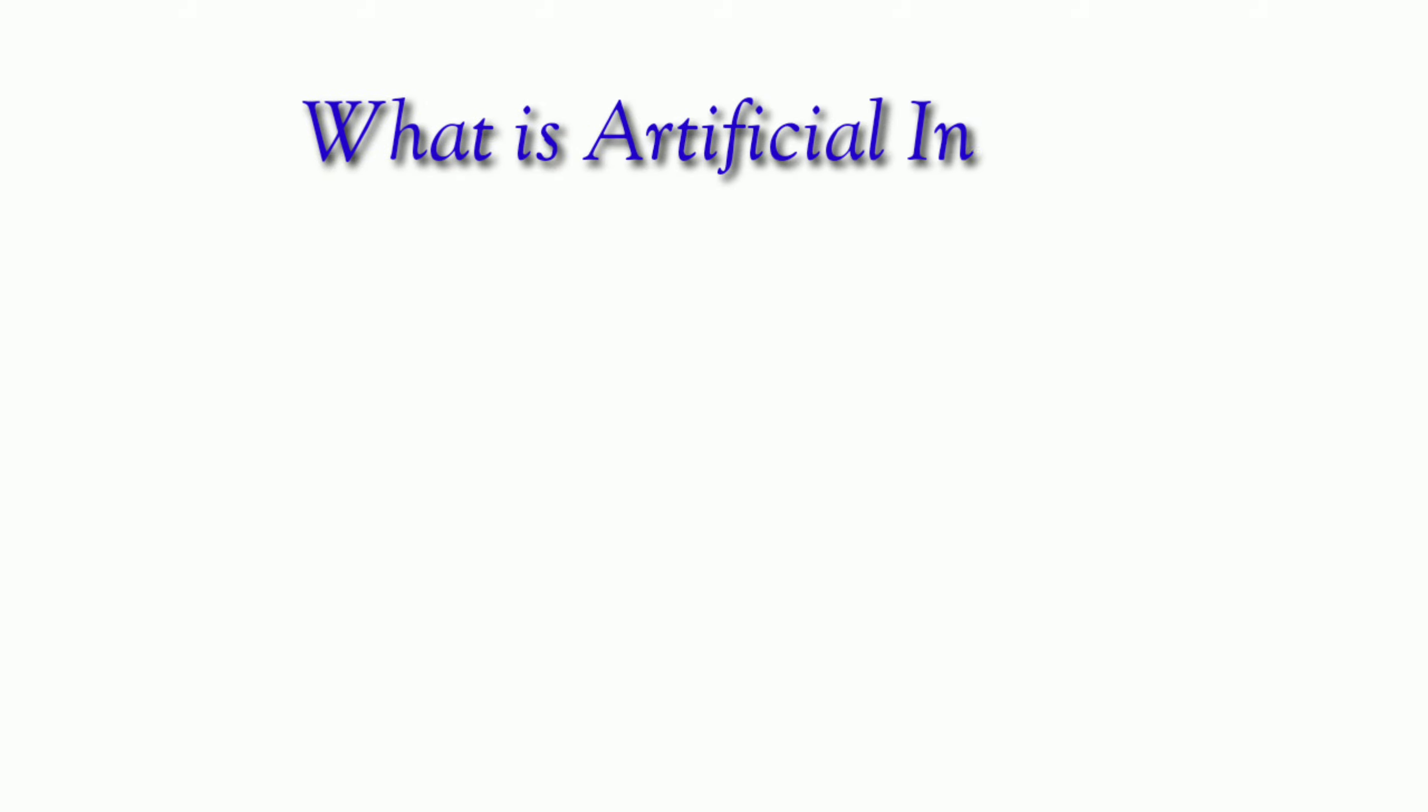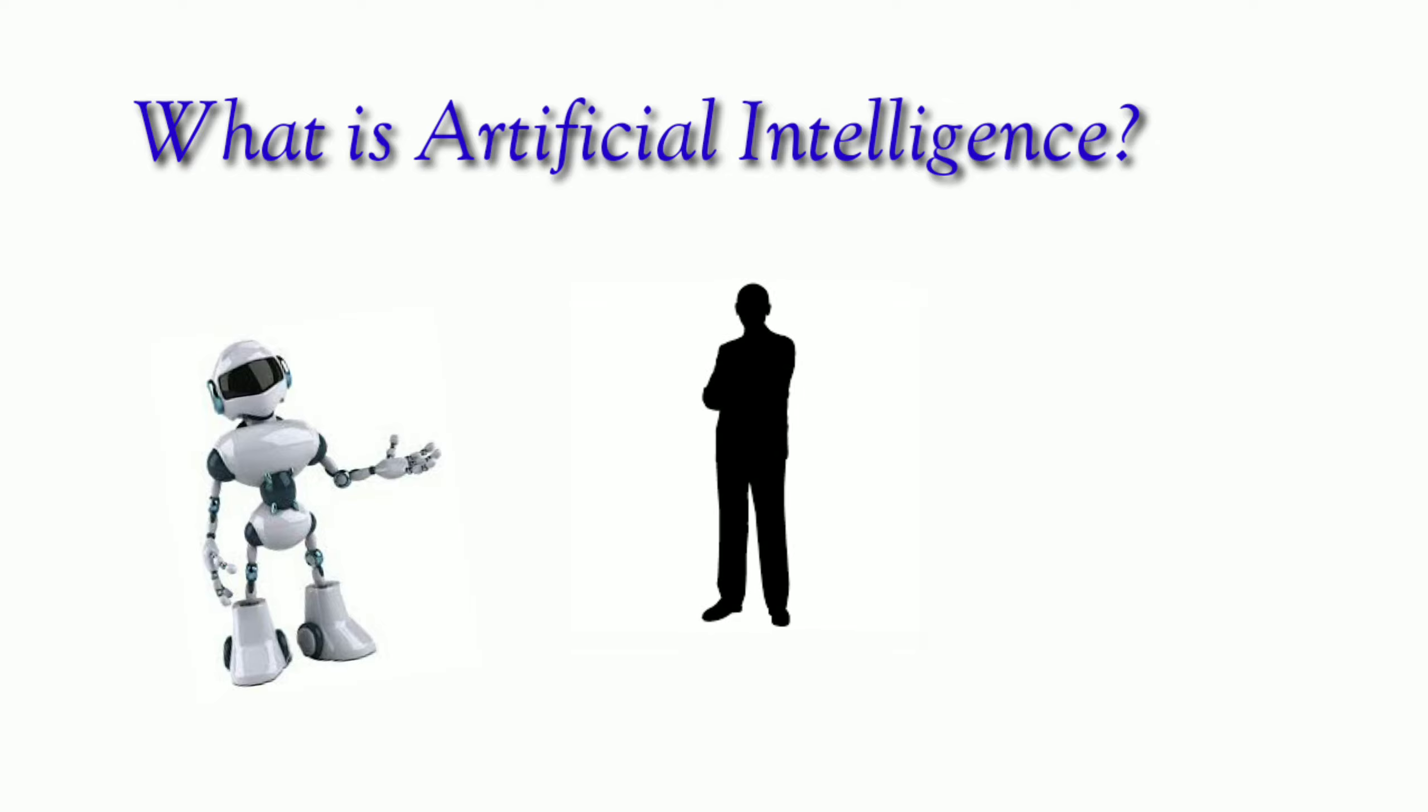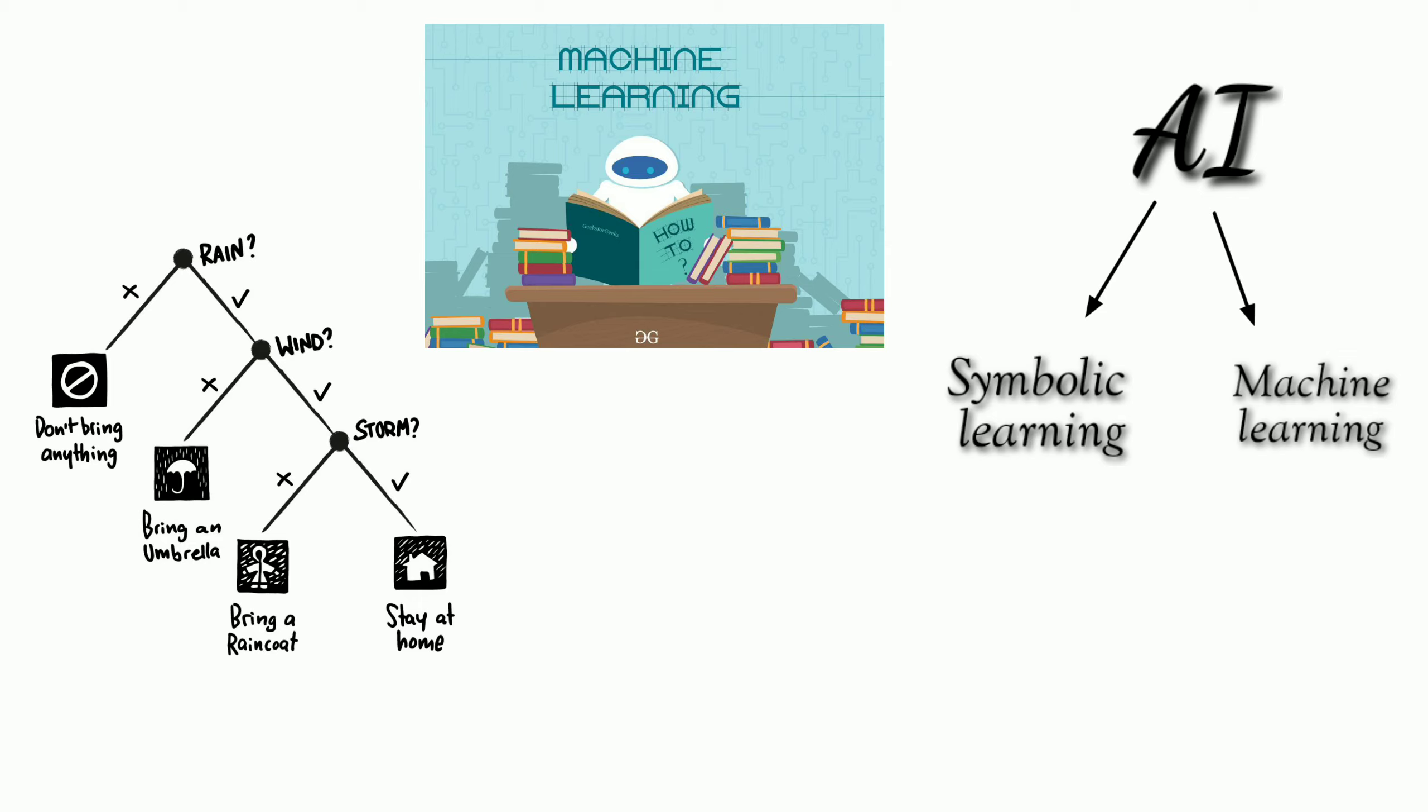What is Artificial Intelligence? Intelligence demonstrated by machines in contrast to the natural intelligence displayed by humans and animals. AI is generally divided into two subdivisions: symbolic learning and machine learning. Robotics is the subdivision of symbolic learning which creates intelligent and efficient robots.